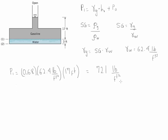So 721 pounds per square foot is the pressure at the interface. Using the same process we're going to calculate the pressure at the bottom of the tank. P2 is going to be the gamma of the fluid between the two points, which in this case is water, times the distance between them, h2, and the reference is going to be P1.